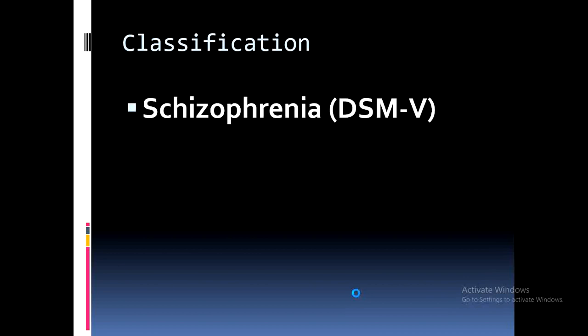The first is the DSM-5, known as the Diagnostic and Statistical Manual, fifth version, used by the American Psychiatric Association. The second is the ICD, the International Classification of Diseases, which is followed by the World Health Organization and the countries that adopt this classification system.